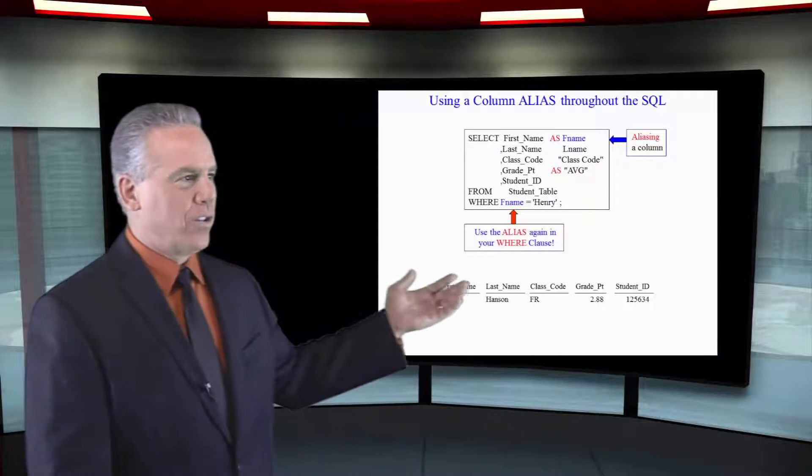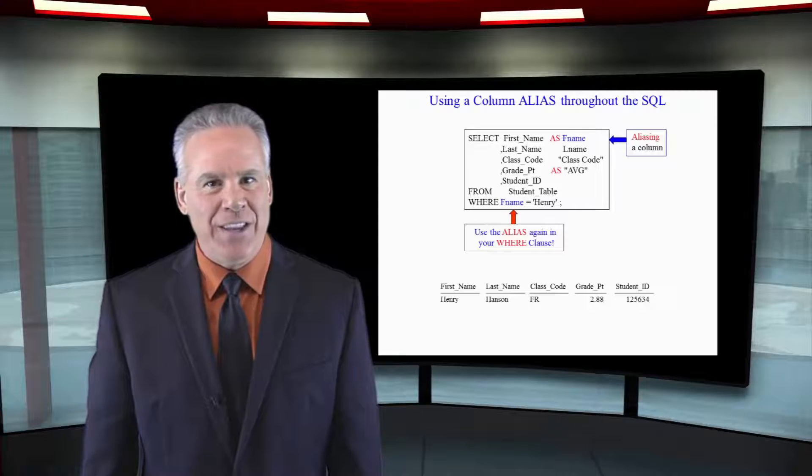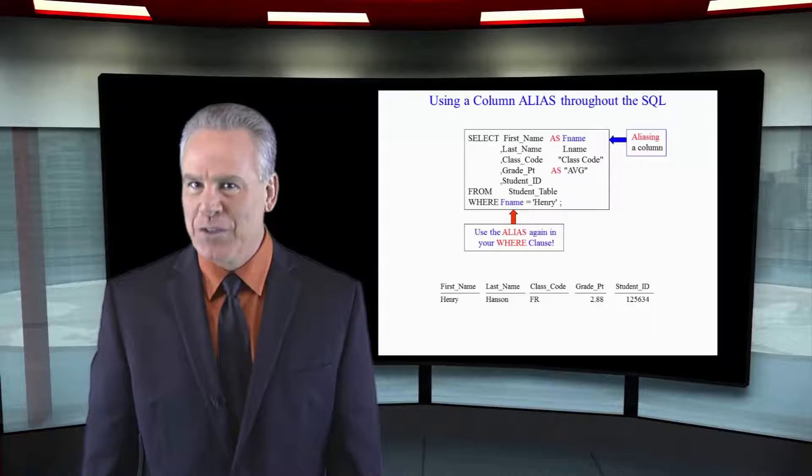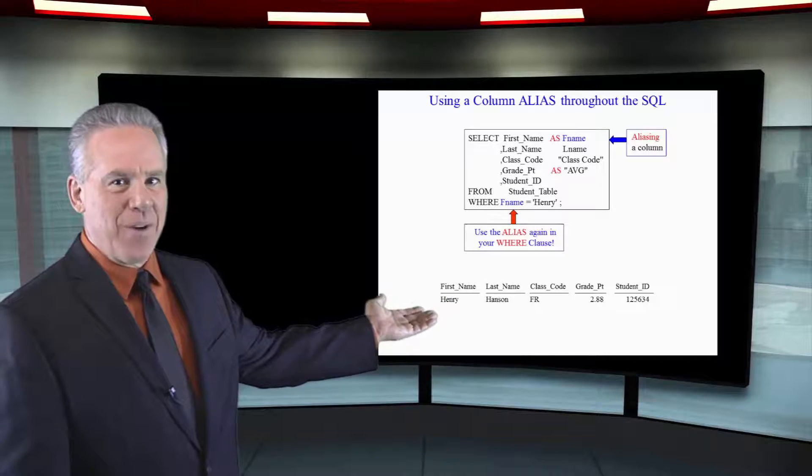Remember our aliasing lesson — here we're saying SELECT first name AS F_name. Notice later on in our WHERE clause we can reuse the alias and say WHERE F_name equals 'Henry', and once again the only rows coming back on this report will be where the first name is Henry.